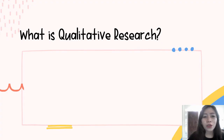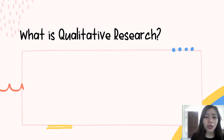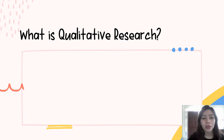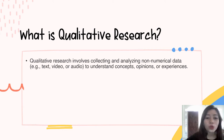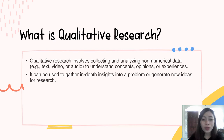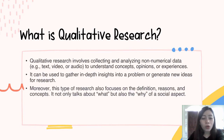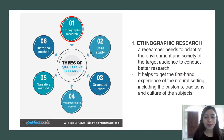We will now further discuss qualitative research because this is what you need to accomplish at the end of the semester — Research in Daily Life 1 is about learning how to make a qualitative research. Qualitative research involves collecting and analyzing non-numerical data, such as texts, videos, and audios, to understand concepts, opinions, or experiences. It can be used to gather in-depth insights into a problem or generate new ideas for research. This type of research focuses on definitions, reasons, and concepts — it not only talks about 'what' but also the 'why' of a social aspect.